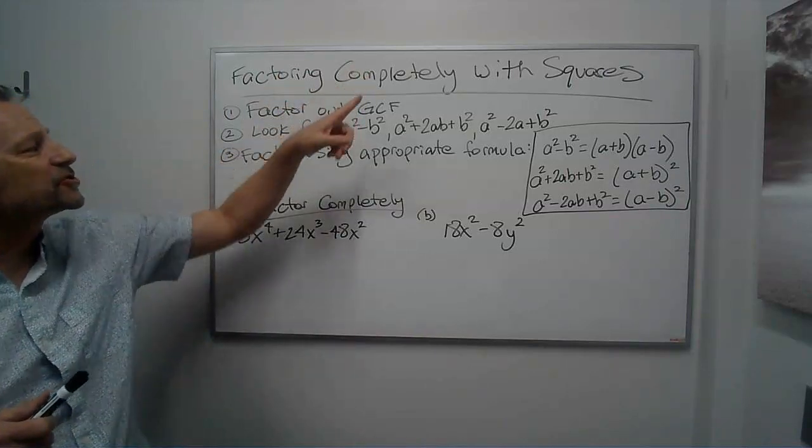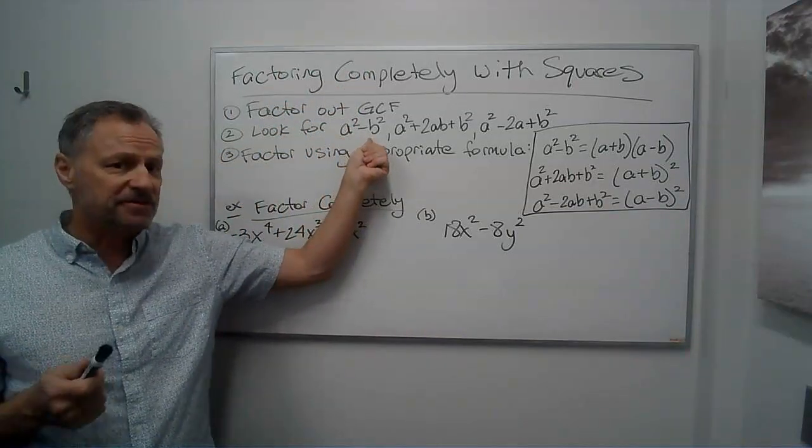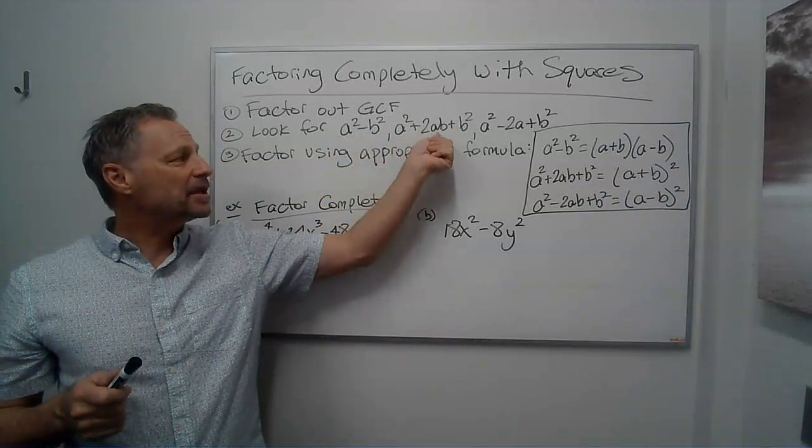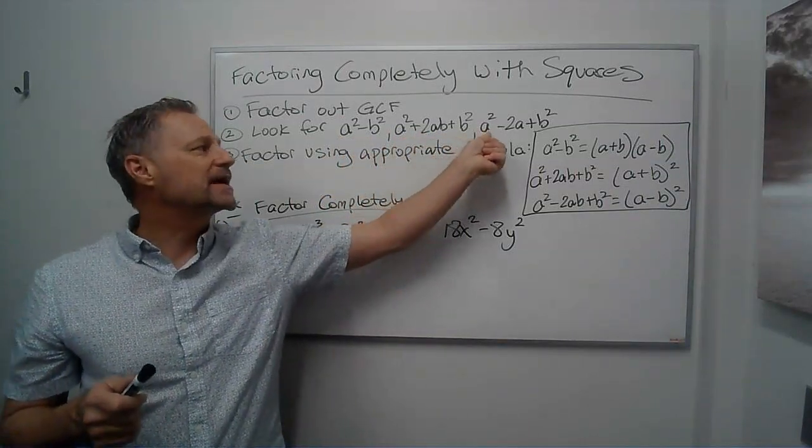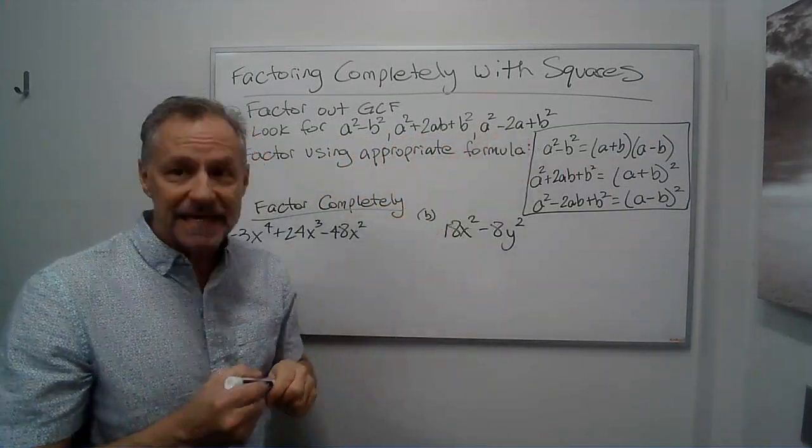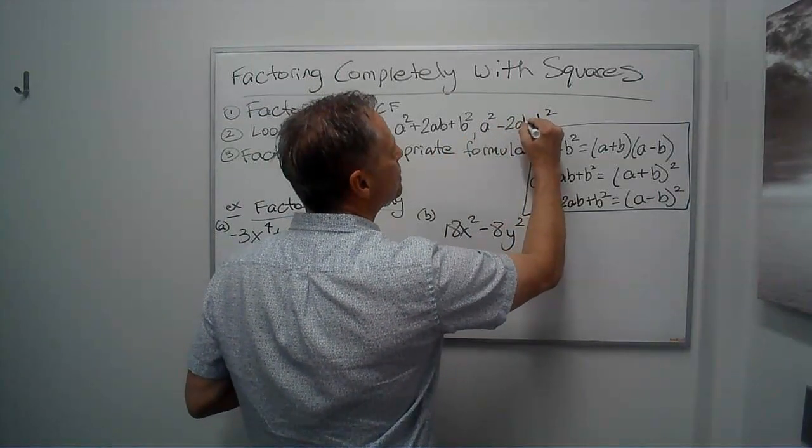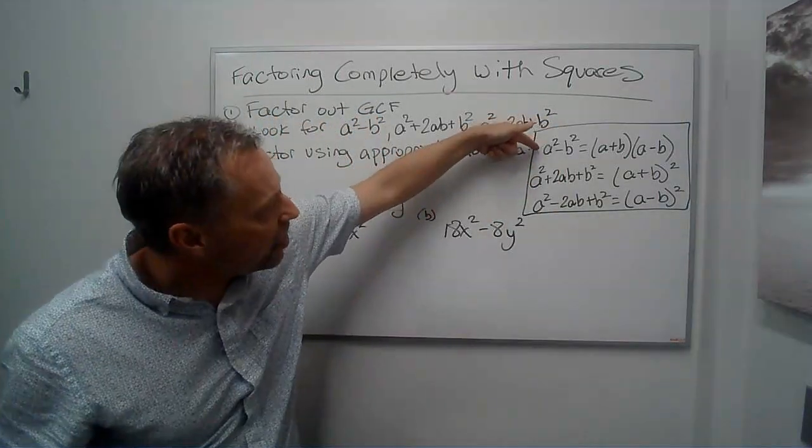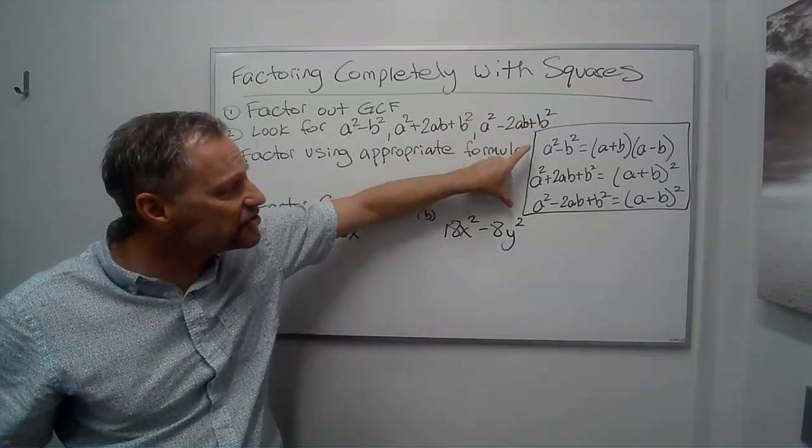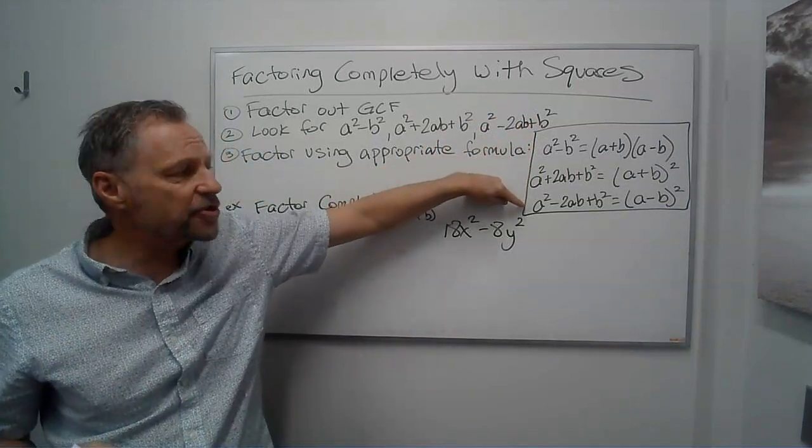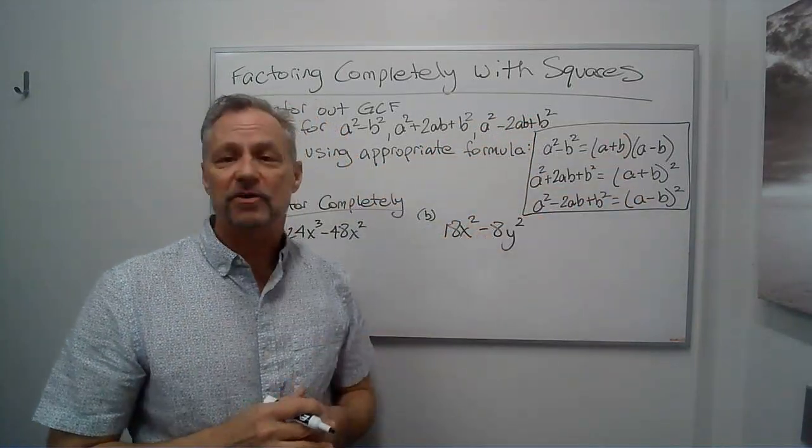And then for the squares, I'm going to either look for a squared minus b squared, the difference of squares, a squared plus 2ab plus b squared, or a squared minus 2ab plus b squared. And all of those I've got in this box, right? Here's the formula. If it fits one of these three patterns, it's going to be one of those three ways to factor.